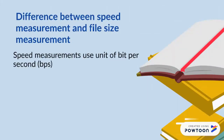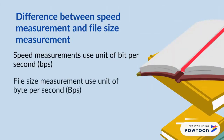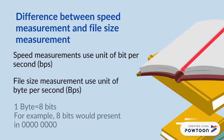Now, we want to talk about the difference between the straight measurement and the fast-side measurement. Straight measurement uses the unit of bits per second, but the fast-side measurement uses the unit of bytes per second. We can say that one byte has eight bits.